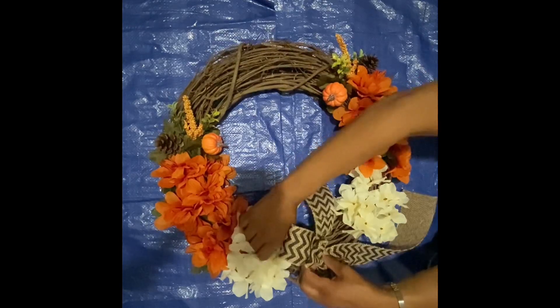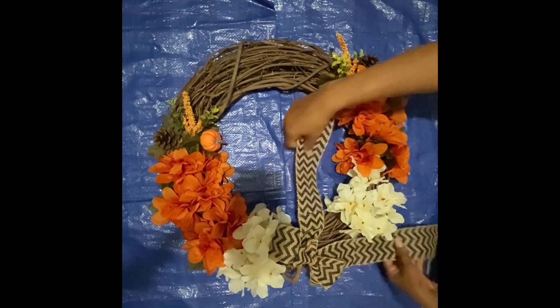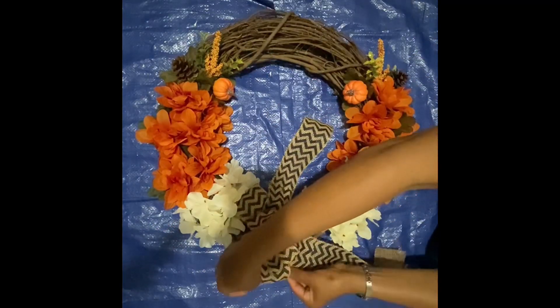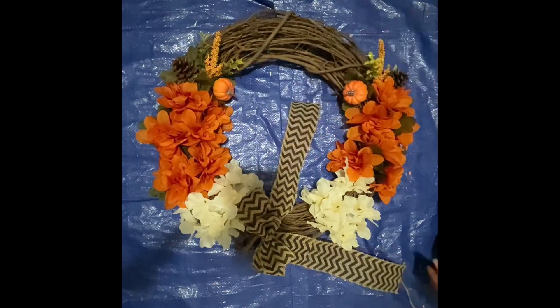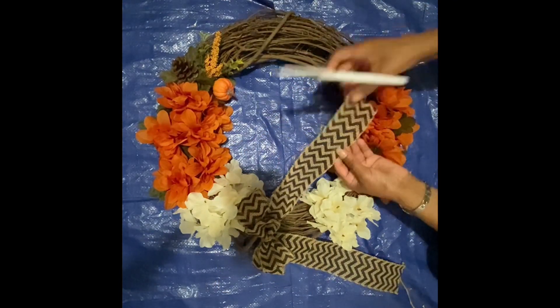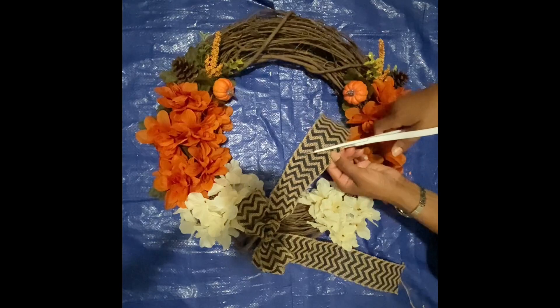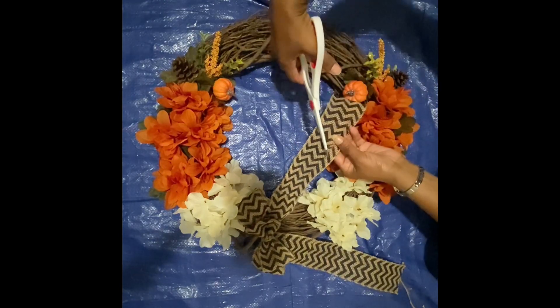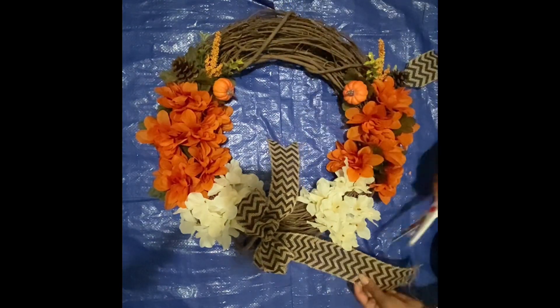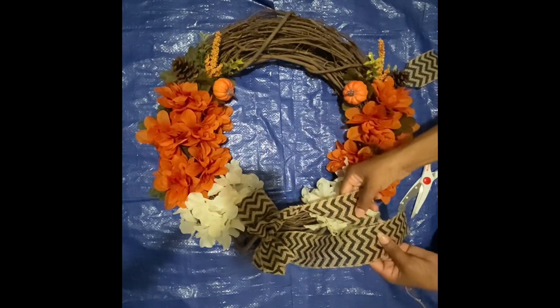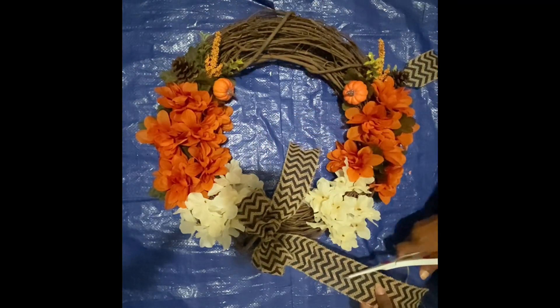So here's my bow guys. I got the ribbon from Dollar Tree for a dollar twenty-five and I just made a quick little bow. There's so many bows you can choose from. I tied it with a zip tie and a lot of my flowers I just use E6000 glue.